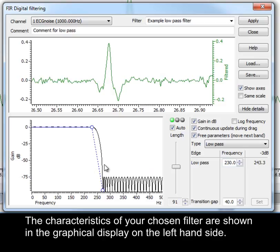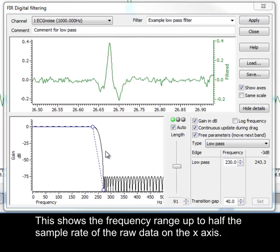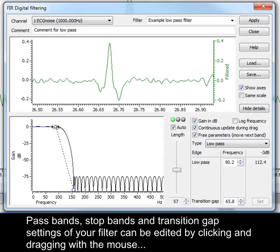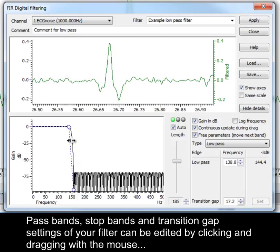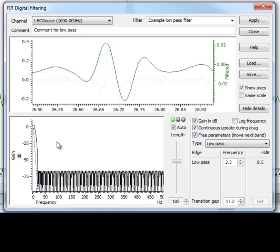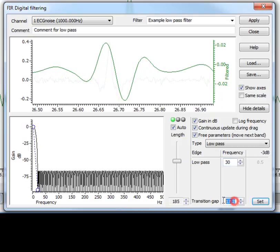The characteristics of your chosen filter are shown in the graphical display on the left-hand side. This shows the frequency range up to half the sample rate of the raw data on the x-axis. Pass bands, stop bands, and transition gap settings of your filter can be edited by clicking and dragging with the mouse, or you can edit the settings directly in the appropriate fields of the dialog, and click the Set button.